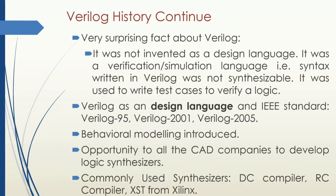The first version of Verilog submitted to IEEE was Verilog 95, and its revised version came in 2001, then a very stable version in 2005. Most importantly with the upgradation of Verilog, behavioral modeling was introduced. Behavioral modeling means designers need not to care at the gate level — they can write their code at the behavioral level and they should know the behavior of the circuit.